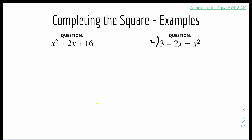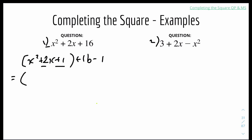Example 1: x² + 2x + 16. We know a = 1, so it's straightforward. Isolate the c coefficient: x² + 2x ... + 16. The new c coefficient is (2 ÷ 2)² = 1² = 1. Plus 1 inside the bracket, minus 1 on the outside. Simplifying the bracket gives (x + 1)², and the outside gives 16 − 1 = 15. Final answer: (x + 1)² + 15.